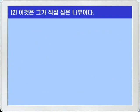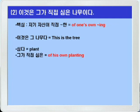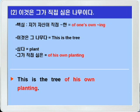다음 2번: 이것은 그가 직접 심은 나무이다. 이 부분을 보면 'of one's own -ing'가 떠올릴 겁니다. 그래서 '자기 자신이 직접 뭐뭐한' 이런 뜻이죠. 먼저 '이것은 그 나무다' — 특정한 나무이니까 정관사 the를 써줘야겠습니다. 그래서 'this is the tree'. 심다는 plant를 쓰면 되니까 '그가 직접 심은' 이런 말이 되려면 'of his own planting' 이렇게 쓰면 됩니다. 정답: 'This is the tree of his own planting.'